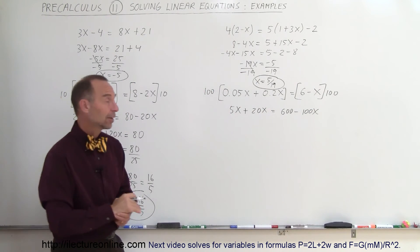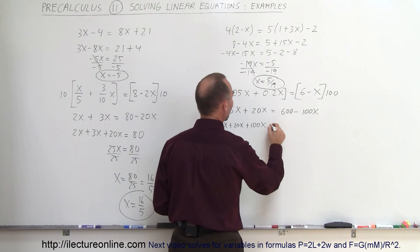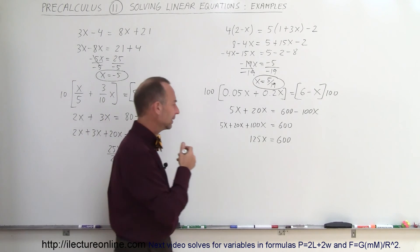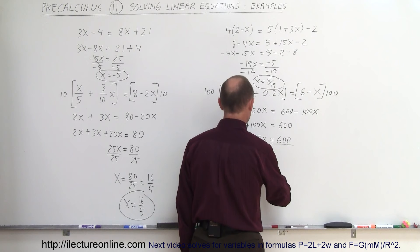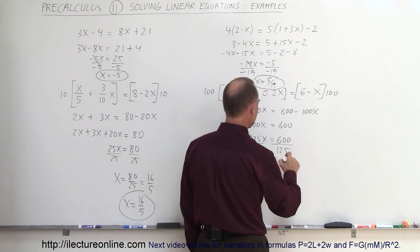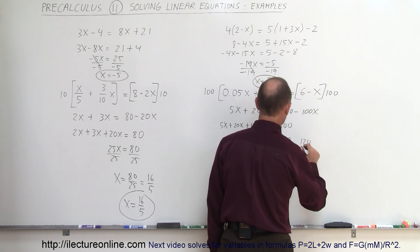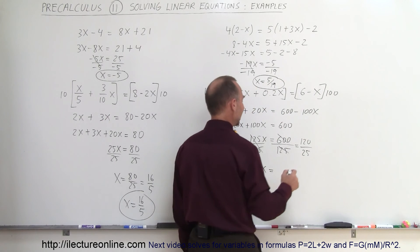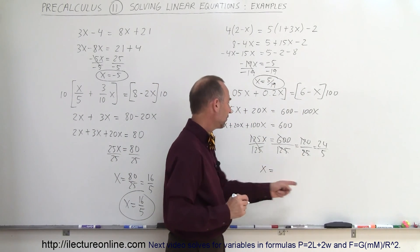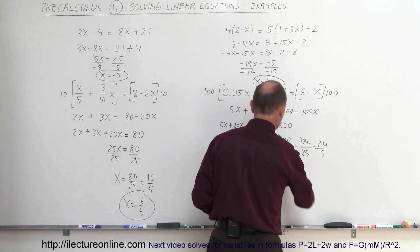The next step is to move all the terms with the variable to the left side, everything else to the right. So this is 5x plus 20x plus 100x — remember that when you cross the equal sign the sign changes — that equals 600. So this is 125x is equal to 600. 125 does not go into 600 evenly, so divide both sides by the numerical coefficient in front of the variable. That cancels out. We can simplify: both are divisible by 5, so 5 goes into 600 120 times, and 5 goes into 125 25 times. We can divide by 5 again, so this becomes 24 divided by 5, and that's the final answer.